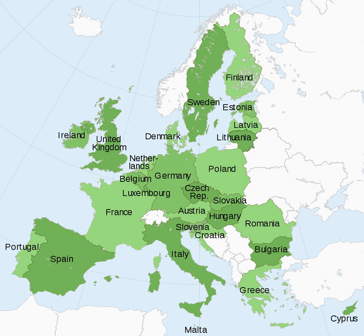A number of states are less integrated into the EU than others. In most cases this is because those states have gained an opt-out from a certain policy area. The most notable is the opt-out from the Economic and Monetary Union — the adoption of the euro as sole legal currency. Most states outside the Eurozone are obliged to adopt the euro when they are ready, but Denmark and the United Kingdom have obtained the right to retain their own independent currencies. Ireland and the United Kingdom also do not participate in the Schengen Agreement, which eliminates internal EU border checks. Denmark has an opt-out from the common security and defence policy; Denmark, Ireland and the UK have an opt-out on police and justice matters, and Poland and the UK have an opt-out from the Charter of Fundamental Rights.